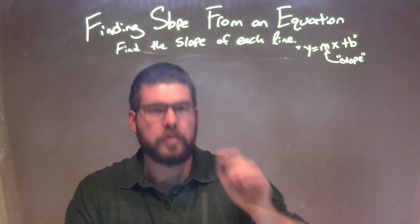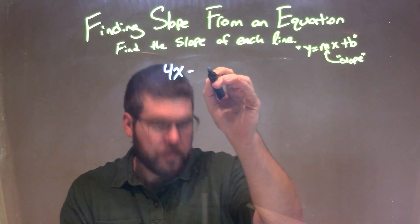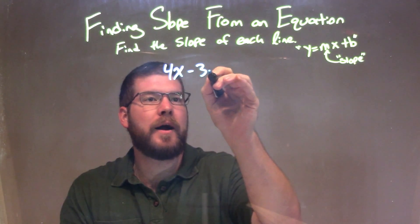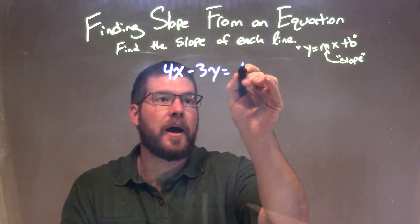So if I was given this equation: 4x minus 3y is equal to 9.